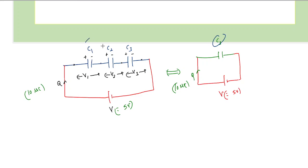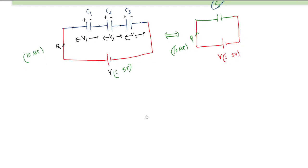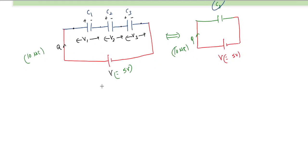We need to find what this equivalent capacitance is in terms of C1, C2, and C3. First, it is obvious that the voltage is breaking up, so the voltage drops across each capacitor add up. Therefore the total voltage V equals the sum of individual voltage drops: V = V1 + V2 + V3.